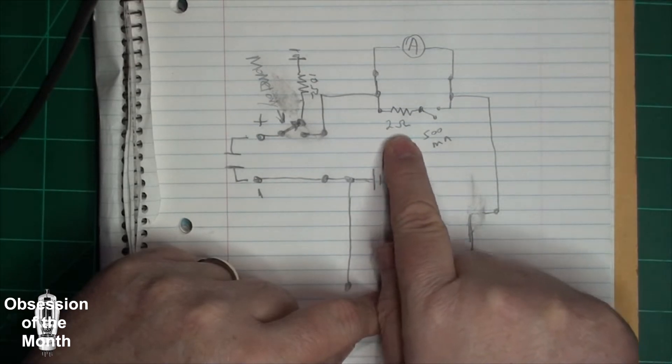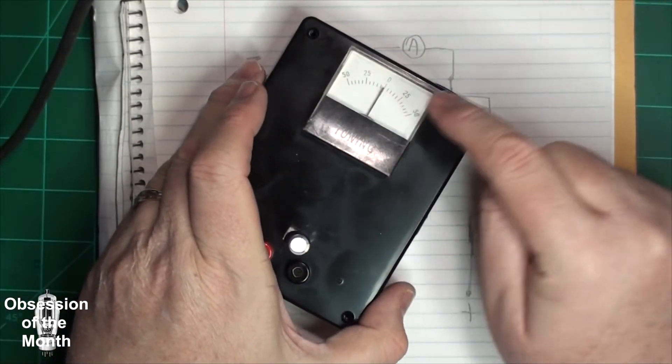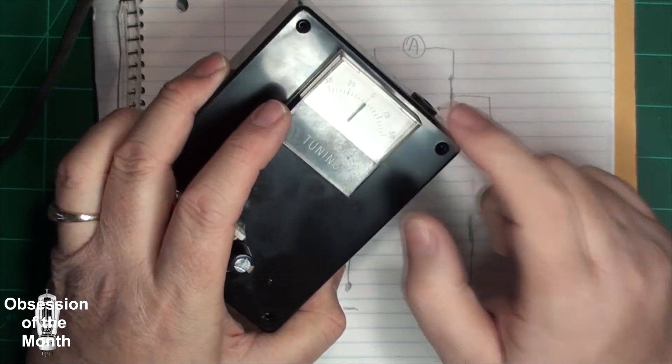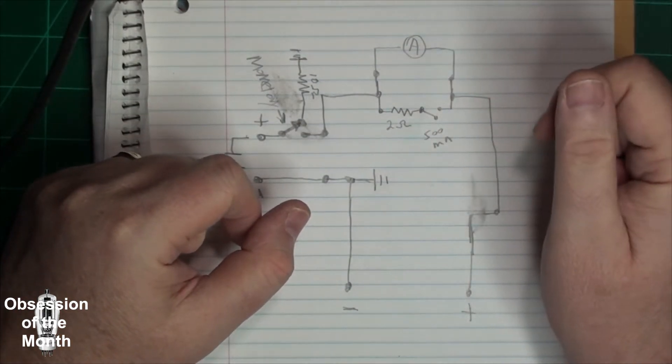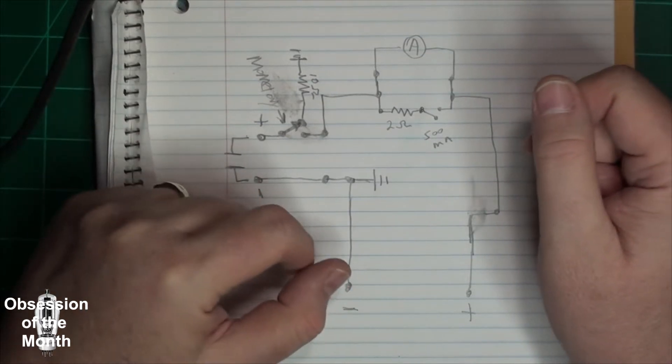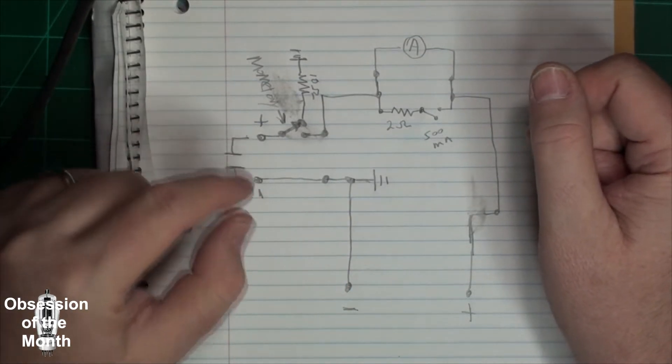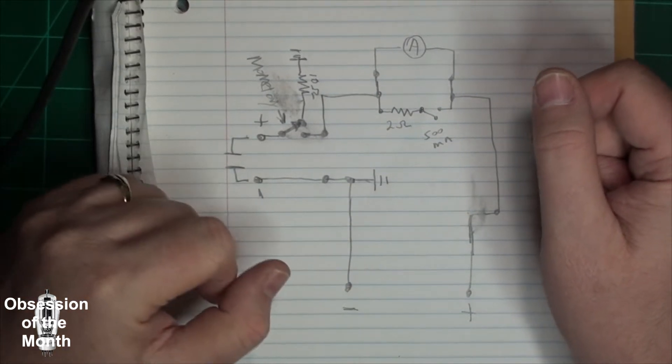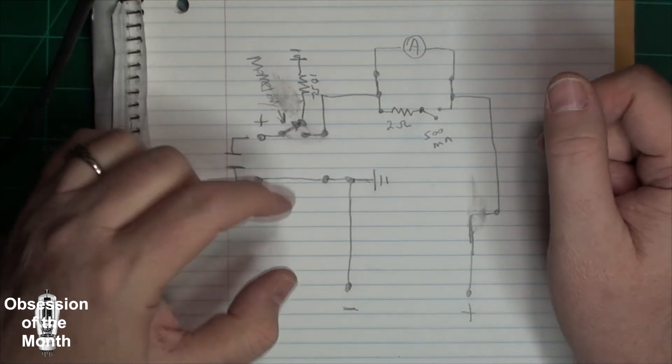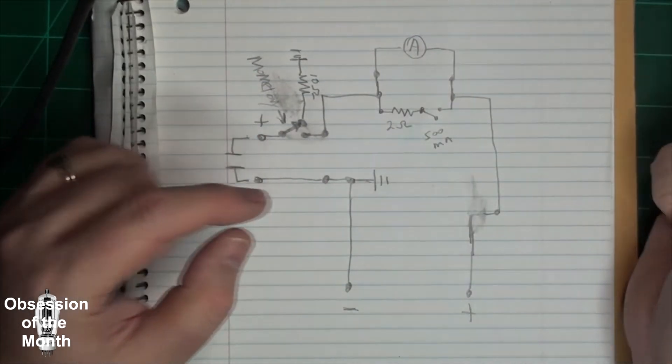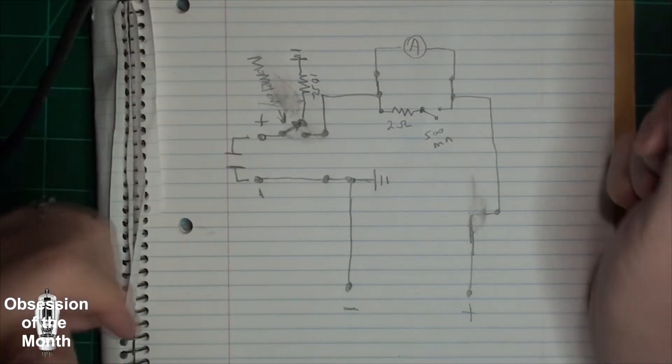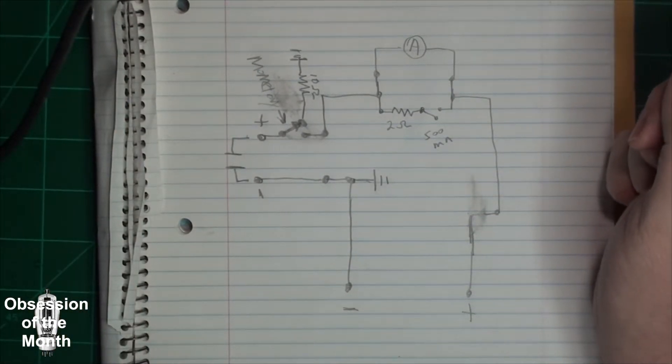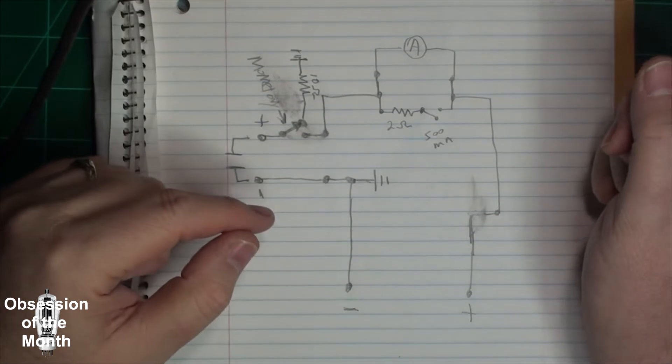This right here turns this 50 micro amp amp meter into approximately a 500 milliamp meter. Mostly so that it keeps the meter from pegging when you hook up a voltage, turn it on and it quickly fills the capacitor because it's not going to really do that through any kind of resistor. It's just going to directly charge the capacitor.